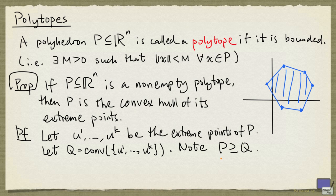So we need to show that there is no element in P that is not in Q. But suppose otherwise. Let V be an element in P, not in Q.